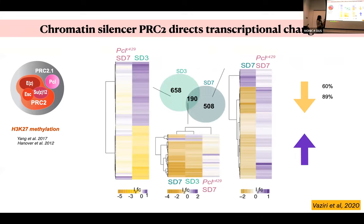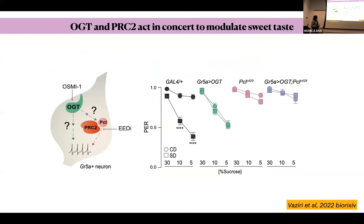When we looked back at the transcriptional changes in sensory neurons, and repeated the experiment in flies with mutations in the PRC2 repressive complex, we could revert essentially all the repression that occurred and restore most genes to normal levels — we can nullify the effects of diet on the cells.